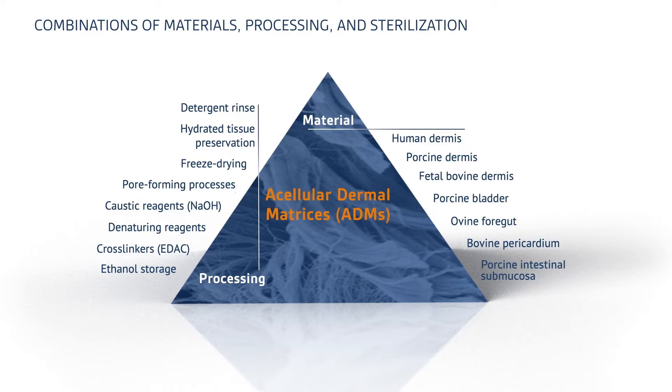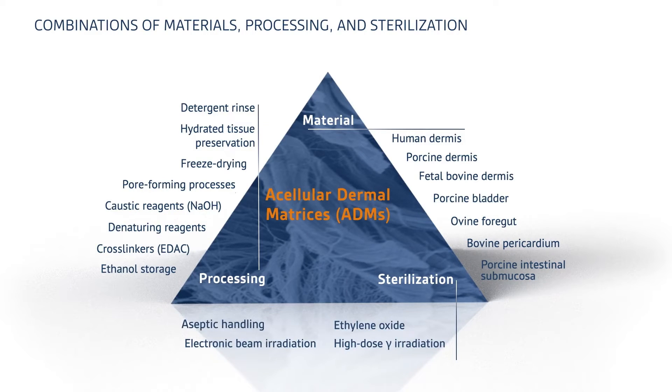The final factor that can affect the properties of an ADM is the sterilization method. This too can vary greatly, from aseptic handling to high-dose gamma irradiation. The key takeaway here is that, with so many different types of surgical scaffolds available, it's important to understand that all the various combinations of materials, processes, and sterilization methods will yield ADMs with different structural and functional properties — and this can lead to different results when implanted in the body.